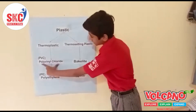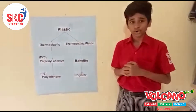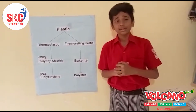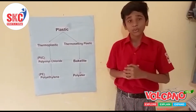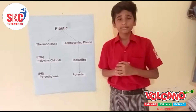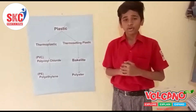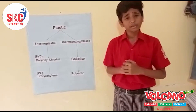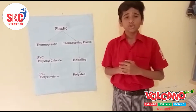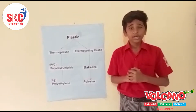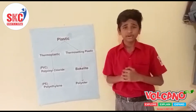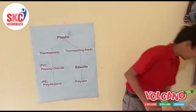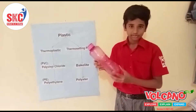Let us talk about PVC, that is polyvinyl chloride. Polyvinyl chloride is the world's third most widely produced synthetic polymer of plastic. About 40 million tons of PVC are produced each year. You might have heard of PVC pipes, PVC bottles, PVC raincoats, and PVC shoes. We have this type of PVC bottle here.